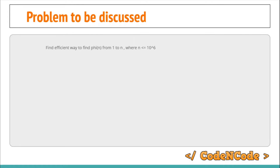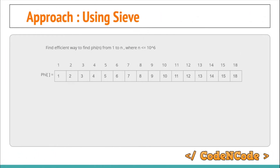We are going to use a similar approach to what we use to find prime numbers in the range 1 to N — that is the sieve. We take a phi array and initialize each element equal to its index, so index 1 stores 1, index 2 stores 2, and so on up to N. This initializes the result with itself — recall how we calculate φ(N): we initialize result with N, then for each prime divisor p we divide result by p and multiply it by (p-1).